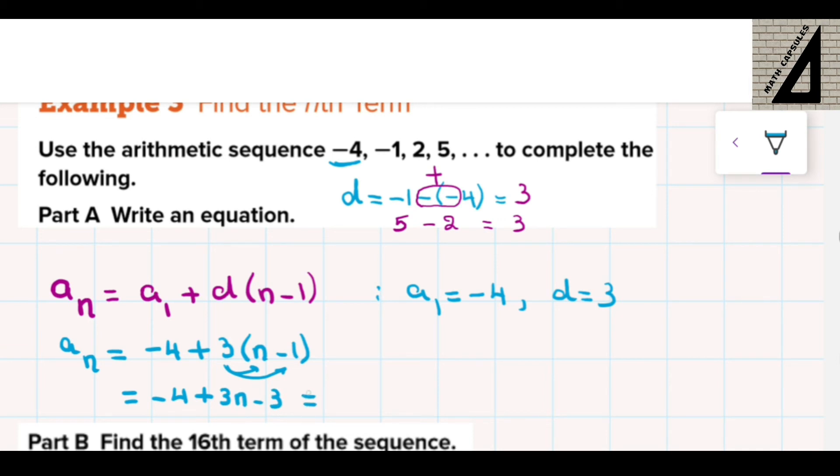Let me write it again as a sub n will be equal to negative 4 minus 3 is negative 7 plus 3n. So now this is the explicit formula for this sequence.